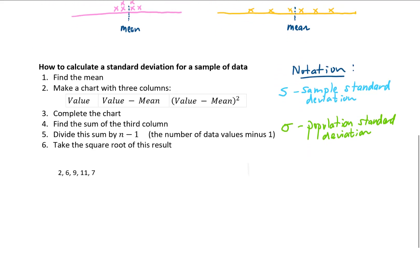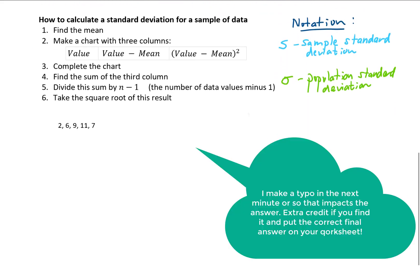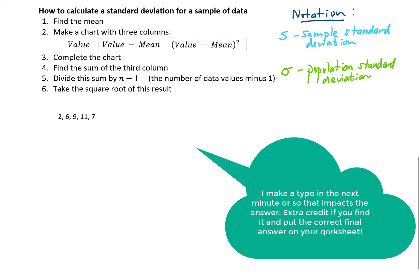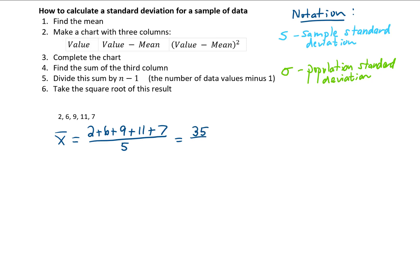Let's go ahead and calculate the standard deviation of this data set. The first step is to find the mean. All of our data values add up to 35, and when we divide by the number of data values, which is 5, we get a mean of 7.